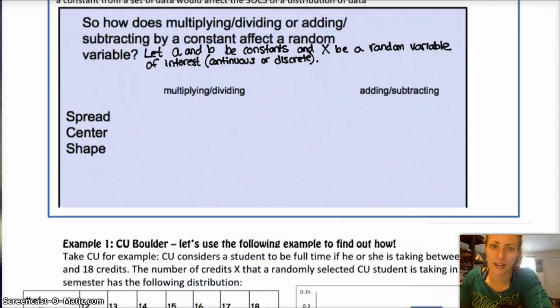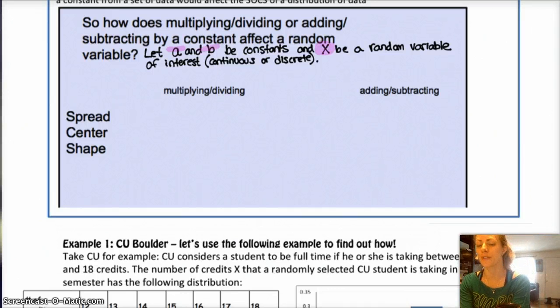And x is the random variable that we're interested in. This actually works for both discrete and continuous random variables. So, if you are multiplying and dividing each value of x, each outcome, by a certain amount. Let's say we're multiplying by a. Right.